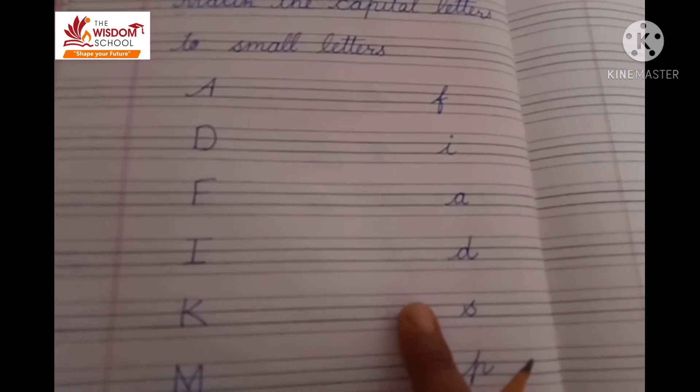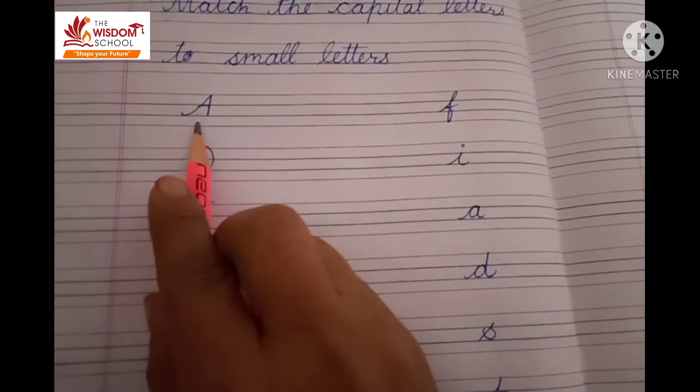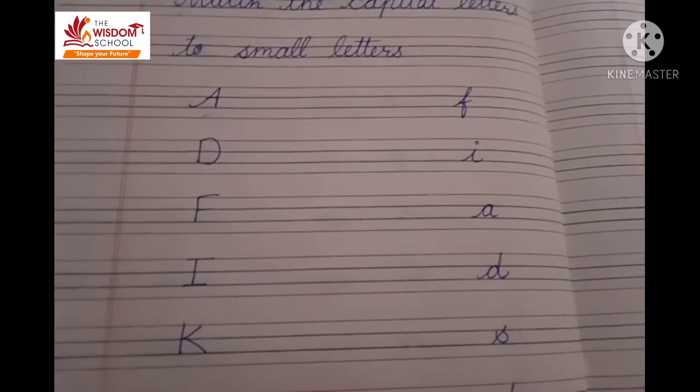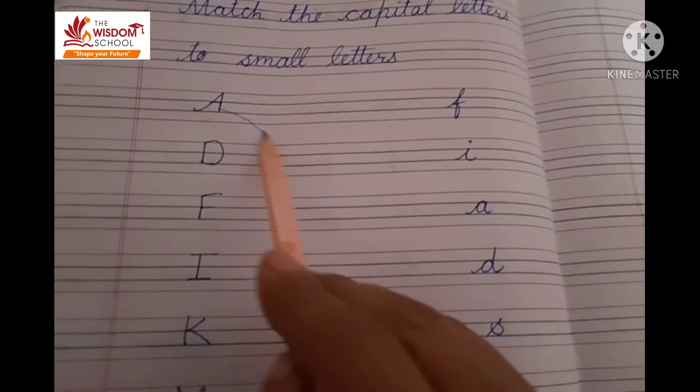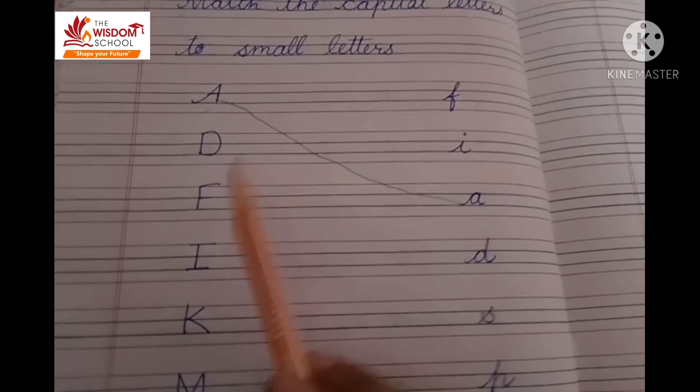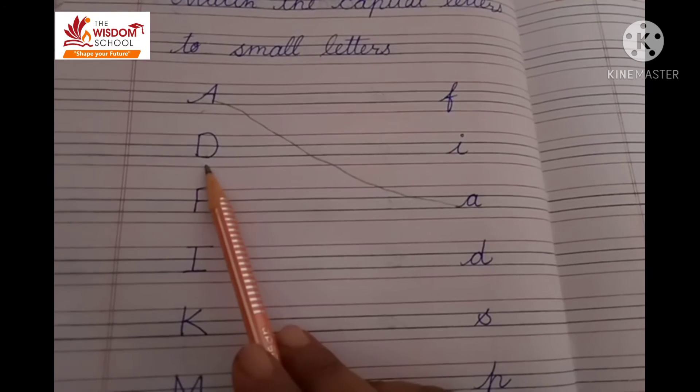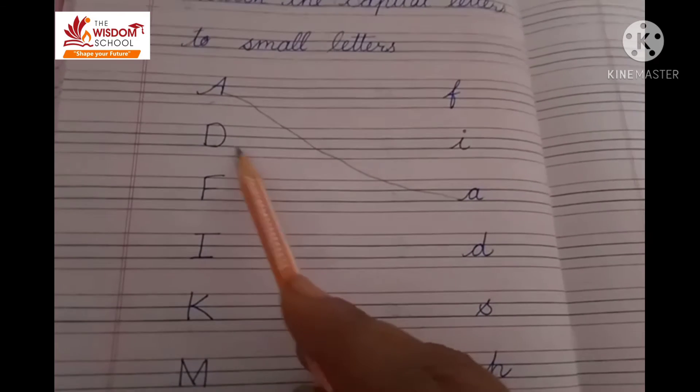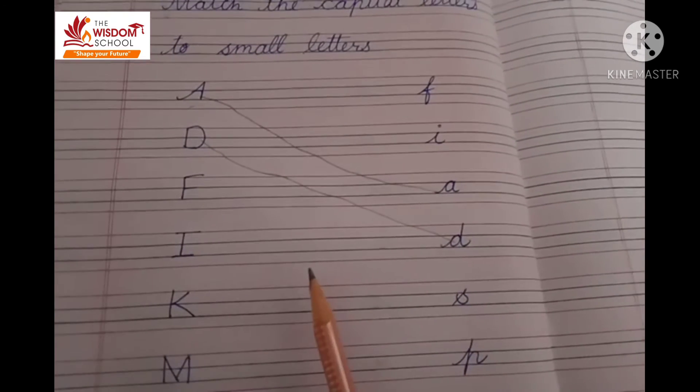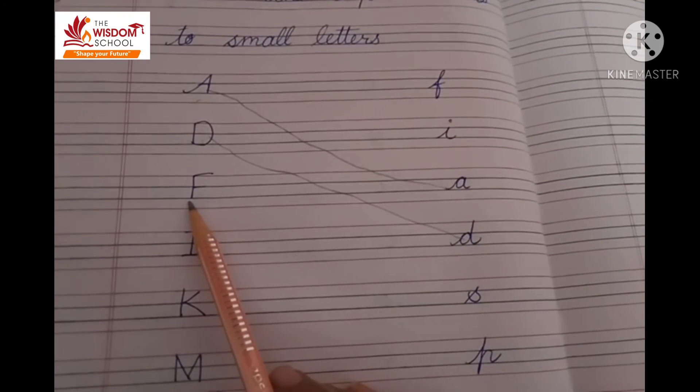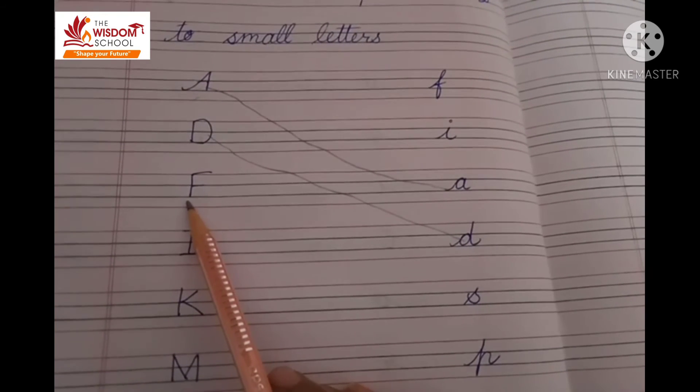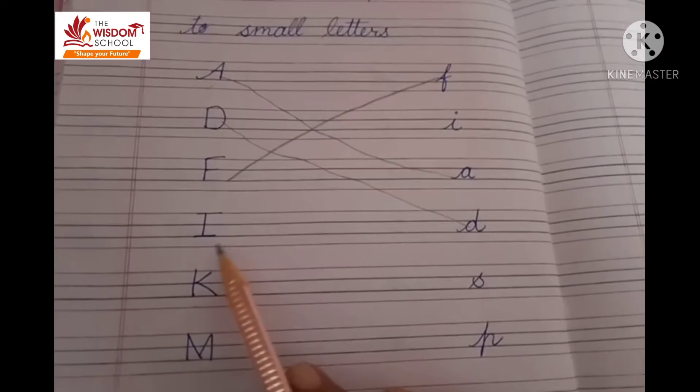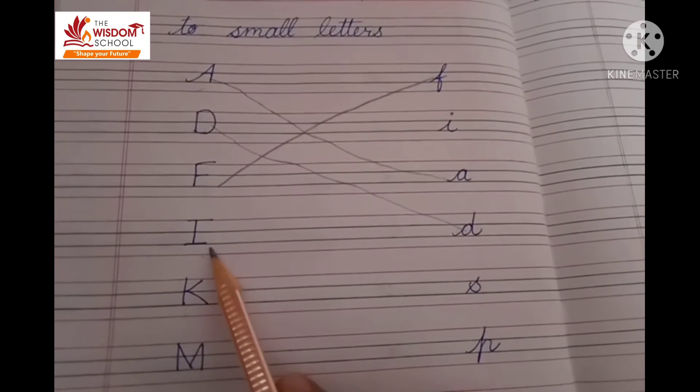We will also match the letter A. Now we will see where the letter A is, and we will match anything. Here we will make a capital letter A. Now we will match the letter A. And now we will add that letter A. Next is the letter D.